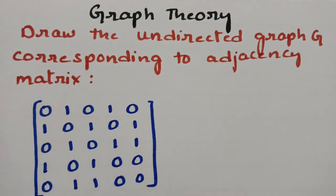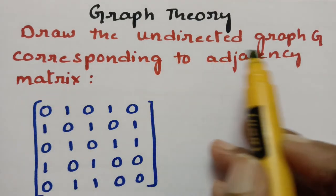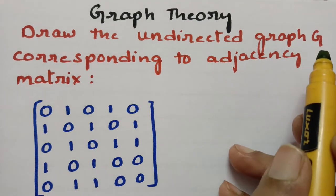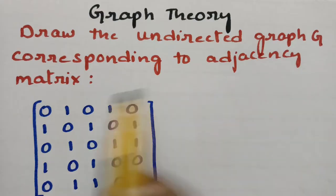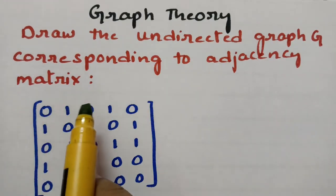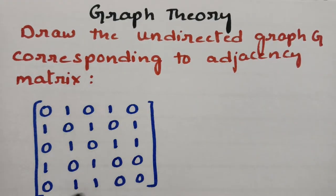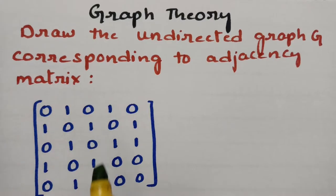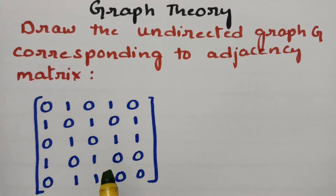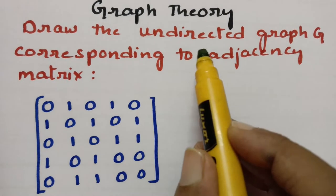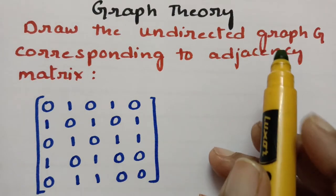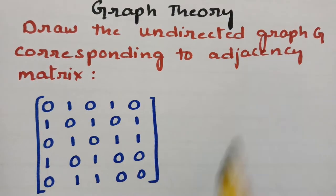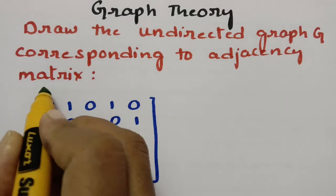In today's video, I am going to teach you how to draw the undirected graph G corresponding to the adjacency matrix. Whenever the adjacency matrix is given, how to draw this undirected graph — there is no direction for this graph — let's get started to learn.